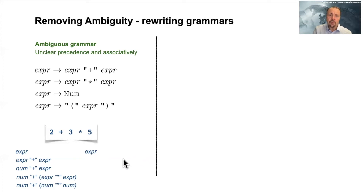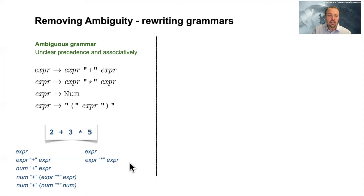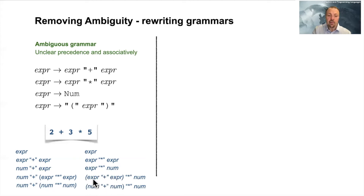But we can derive this in a different way, since this grammar is actually ambiguous. Let's look at such a derivation. We start with expression, then take the multiplication production: expression multiplied by expression. We replace the right expression with num representing 5, then take the left expression and use the plus production. Going from expression to num and expression to num, we have derived two different trees from the same expression. So the grammar is ambiguous because we can derive two different trees from the same expression.